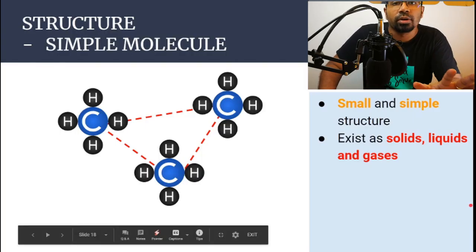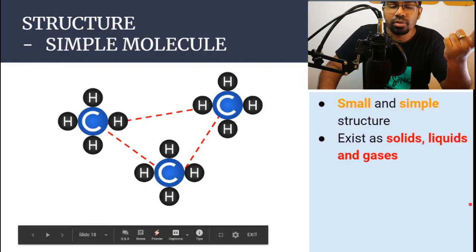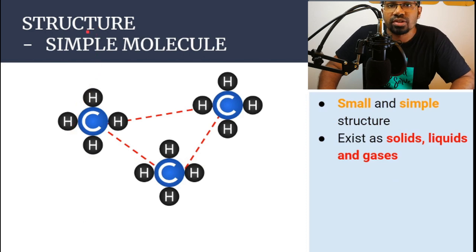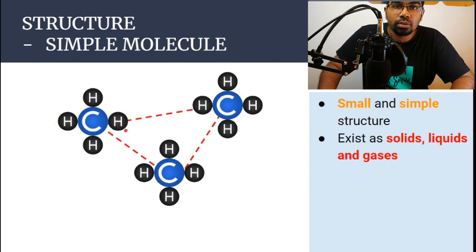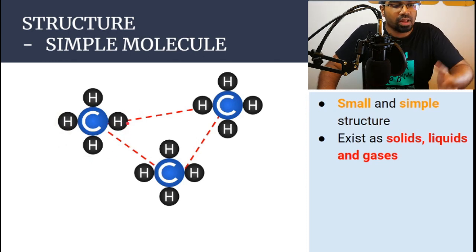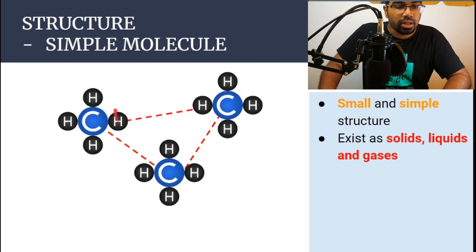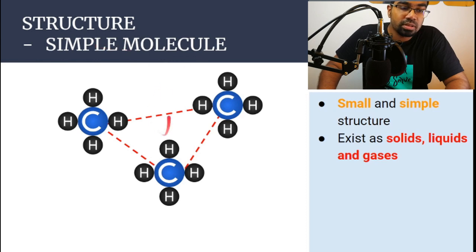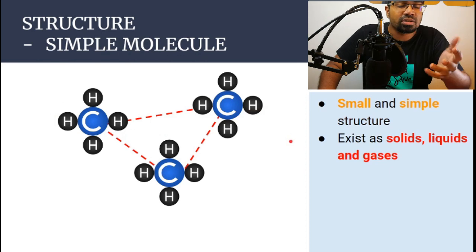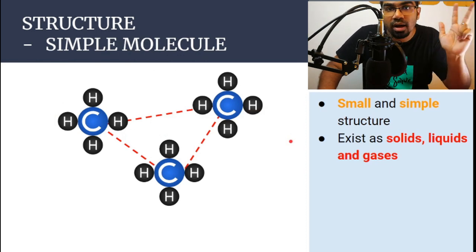There are generally two types of covalent compounds: simple molecules and giant molecules. An example of a simple molecule is methane — one carbon atom bonded to four hydrogen atoms, forming one molecule. When we have a jar of the compound there will be many small molecules present. The structure of a simple molecule is small and simple, and they can exist as solids, liquids, and gases — all three states are common.